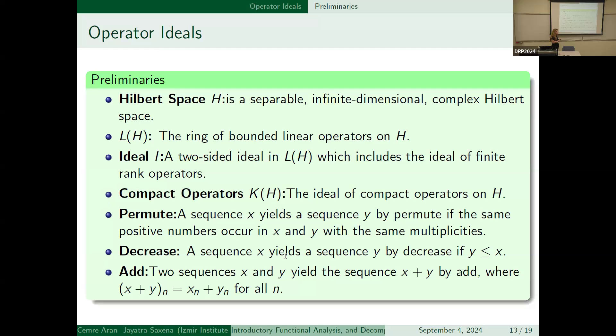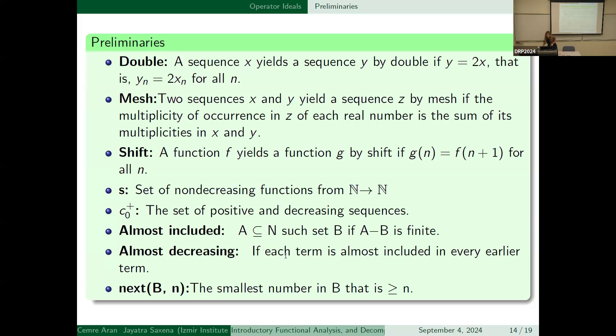Pyramid is x yields by y if they have the same position numbers occurring in both of them. Decrease is if y is less than or equal to x, it means it's decrease. And x plus y means (x+y)_n is equal to x_n plus y_n, it means it's adding. And double is if y_n is equal to 2x_n, it's double. And mesh: if two sequences x and y yield by z, if the multiplicity of the occurrence z in each real number is the sum of the multiplicity in x and y.